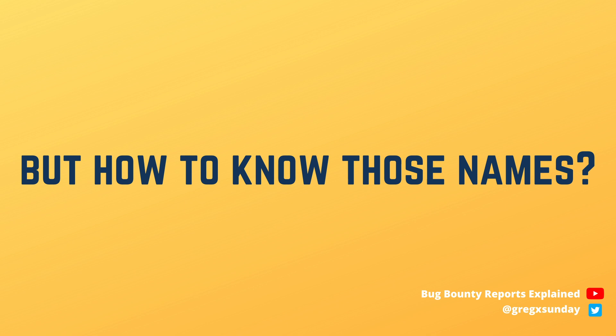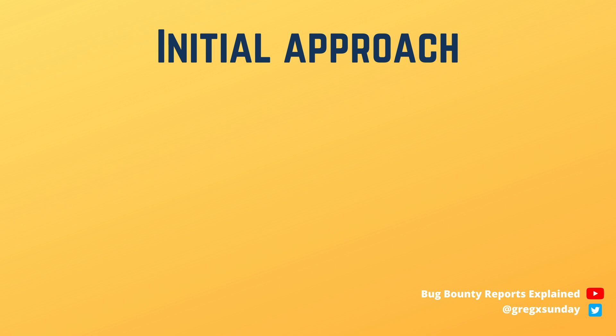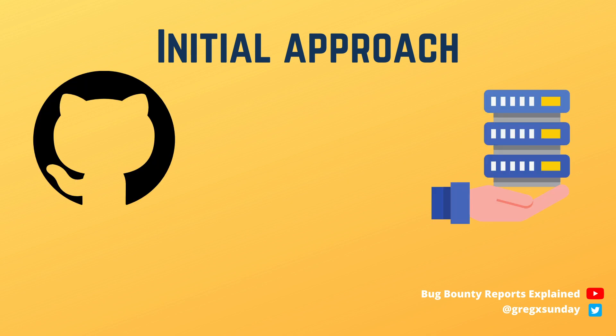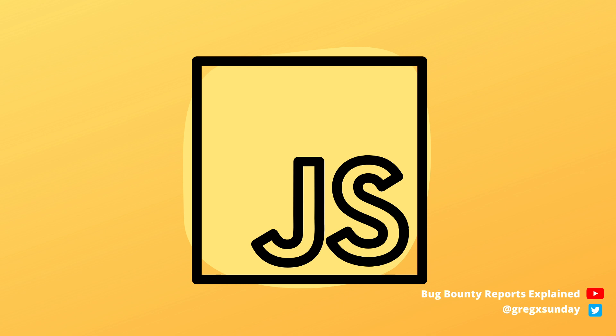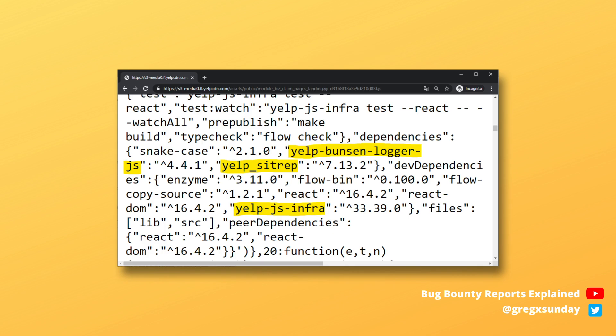But now came the biggest challenge: how to get those private package names. First, the researcher targeted some companies and tried to find their leaked names on GitHub, on package hosting services, or even on different forums. But this approach was very time-consuming, not really efficient, and not at all automatable. The best source turned out to be JavaScript files — when creating a Node.js application, some JavaScript code gets bundled into the client-side code, which is available to the user. NPM uses a package.json file to store dependency names, and this file quite often gets bundled into the client-side code. Finding package names using this approach was much better because it's fully automatable.